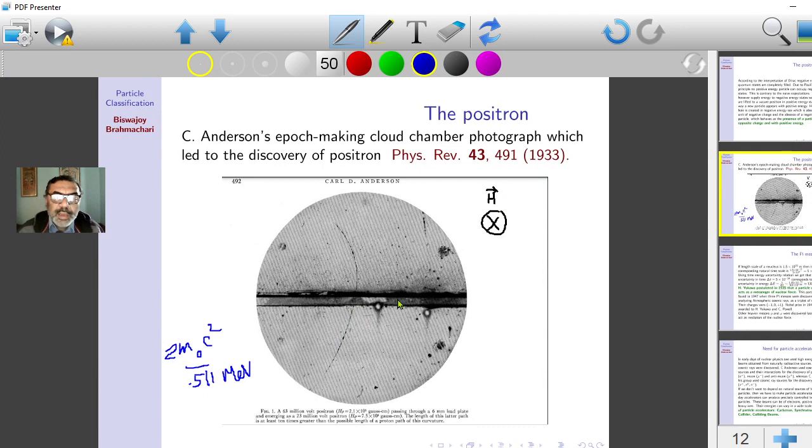understand that the velocity or kinetic energy is large here, and while crossing the lead block it has reduced its kinetic energy. That is why its curvature has grown—the path is more curved here and less curved here. The kinetic energy is more here, less here. That means the particle must have gone from the lower chamber to the upper chamber. That is the direction of velocity.